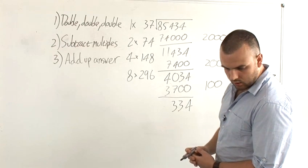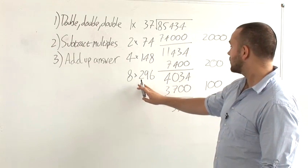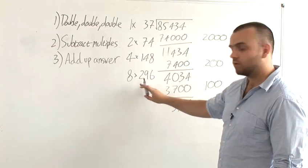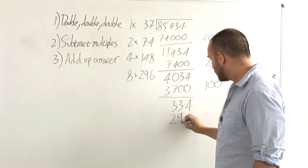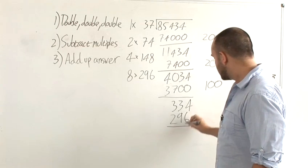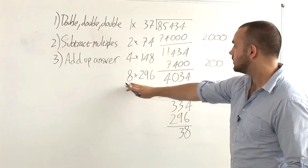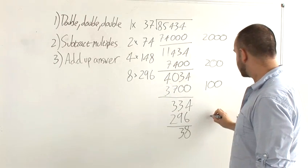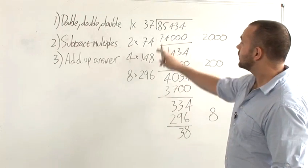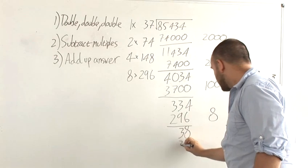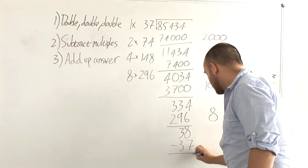And finally, the most appropriate number there would be the 8 times number, 296, giving you 38. 296 is the 8 times number, this time just 8. And finally, we can deduct one more. Minus 37 gives us 1.